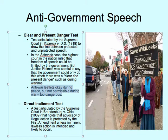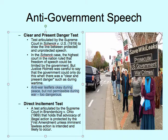The direct incitement test comes from Brandenburg versus Ohio. You can say that you're going to do something illegal, however, if it constitutes imminent lawless action — meaning it is definite that you are going to do something illegal and you intend to do it imminently — then that is a problem.